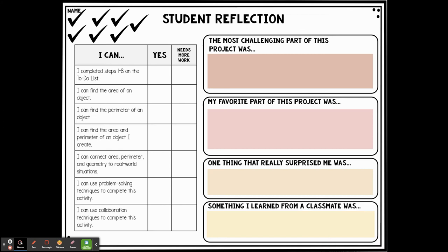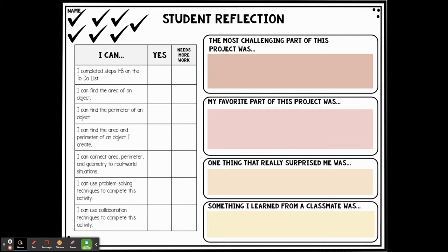Then when it's time for your student reflection, you will see some different 'I can' statements. You're going to decide yes, or you need more work on this. It covers completing steps one through eight, finding the area, finding the perimeter, and connecting area, perimeter, and geometry to real world situations. You can use problem solving techniques and collaboration techniques to complete this activity. Then over to the right, you've got four things to fill in: the most challenging part of this project was, my favorite part was, one thing that really surprised me, and something I learned from a classmate — or something you learned along the way.